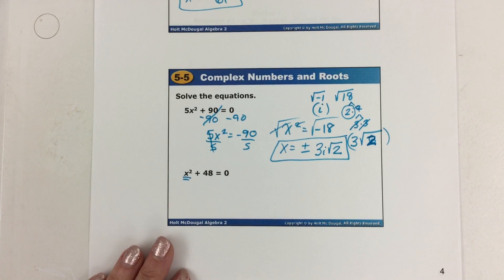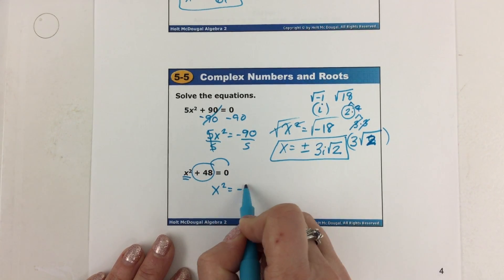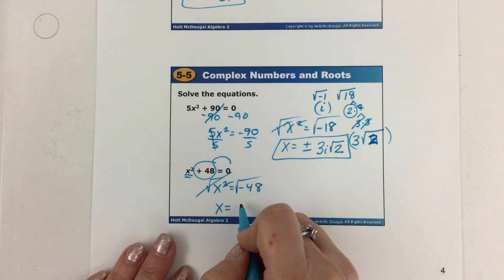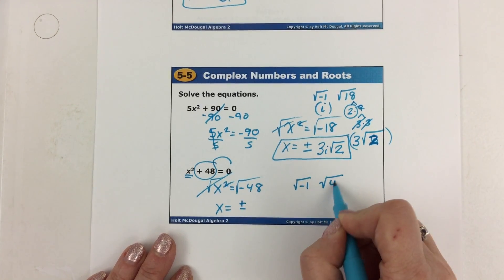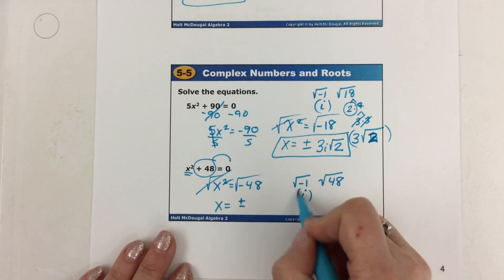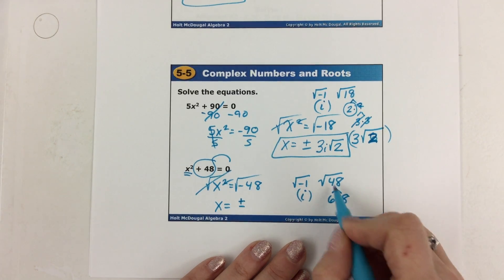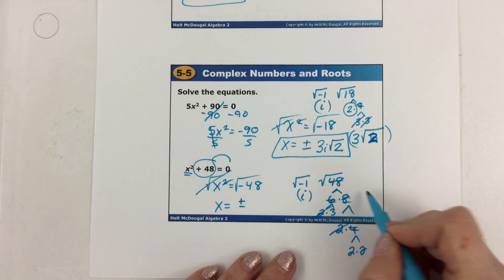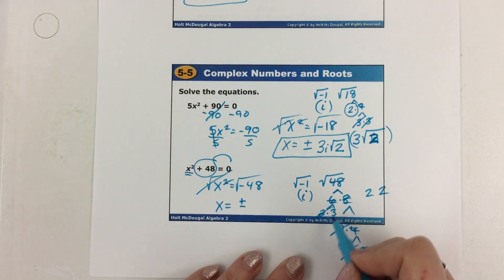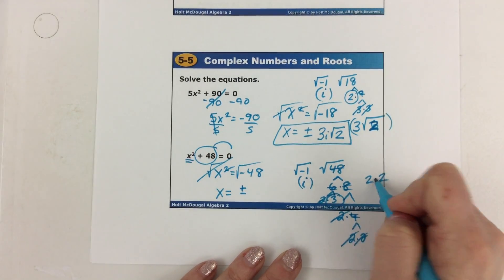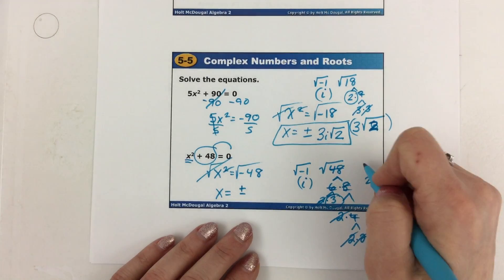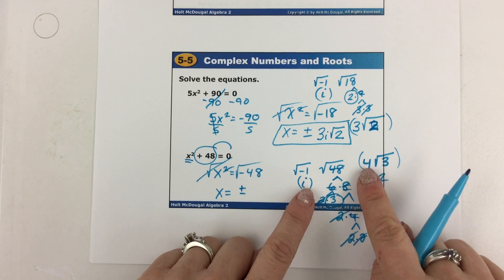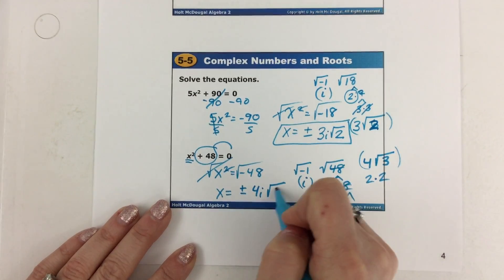Next one: to solve for x squared, move the positive 48 to the other side. To cancel a power of 2, take the square root — that cancels it, so x equals plus or minus. Take out the negative 1; the 48 is now positive. This is i — it makes the whole thing imaginary. 48 is 6 times 8; 6 is 2 times 3; 8 is 2 times 4; 4 is 2 times 2. Cross off two 2s — write a 2 on the outside. That 3 is stuck inside. I have a second 2 on the outside as well. Multiply the outside numbers together: 2 times 2 is 4. Underneath the radical is what couldn't be crossed off — it's a 3. The i times 4 gives 4i. Solution: plus or minus 4i times the square root of 3.